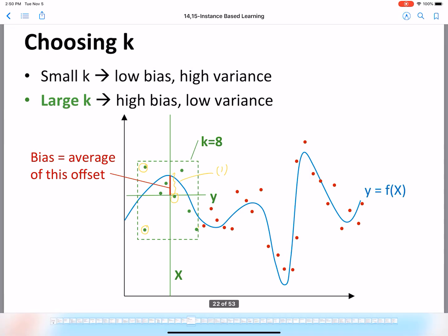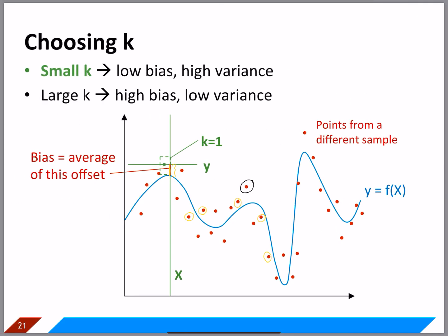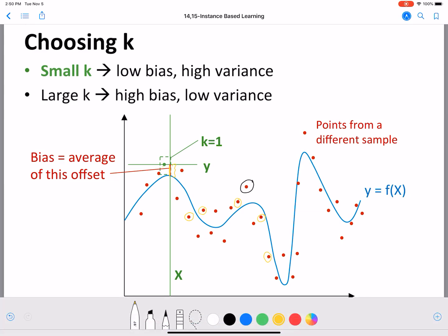Going back to the small value of K, we can see that this would have a higher variance than a large value of K. For the yellow circled points, the bias is quite close to the curve. But some individual points are much higher, so the variation in values is higher. That's what we call high variance, and it happens when you have a small value of K because the difference between the individual biases is large.